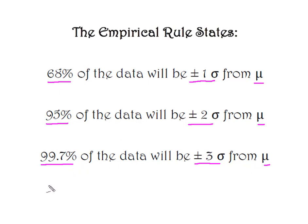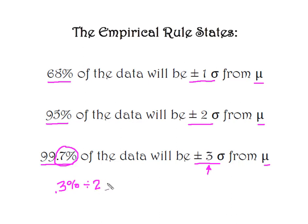50% of the data is above and 50% is below the mean, except we have a little bit that's not accounted for. That 0.3% of the data falls beyond the third standard deviation. Because we have a symmetrical curve, we know that 0.15% of our data is going to fall beyond the third standard deviation on each side.